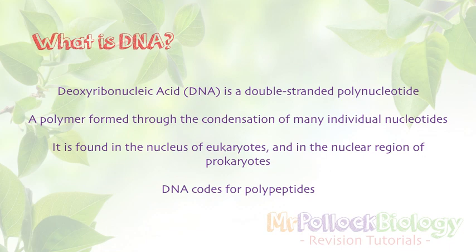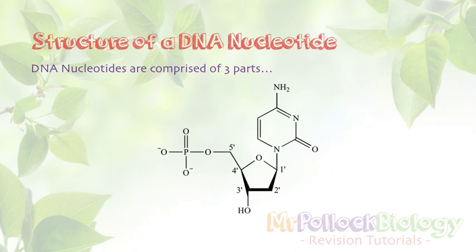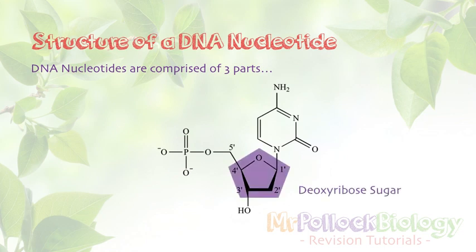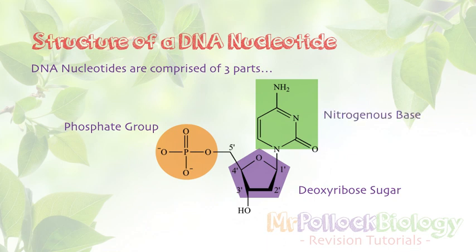Let's look at those building blocks of DNA — let's look at a nucleotide. It looks quite complicated, but we're going to break it down because it's essentially only made up of three parts. We've got a pentose sugar, which in the case of DNA is called deoxyribose — hence the name deoxyribonucleic acid. We have a phosphate group, and then we have a nitrogenous base. There are four different nitrogenous bases that can be found in a DNA nucleotide, and we'll have a look at those in just a second.